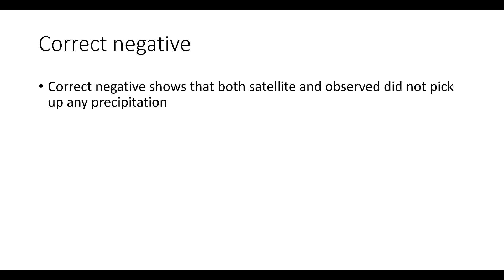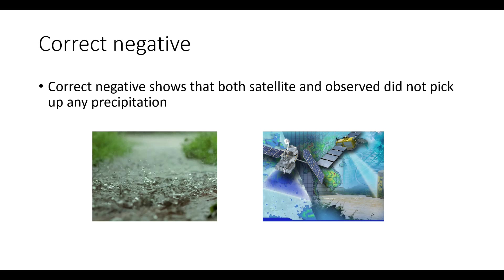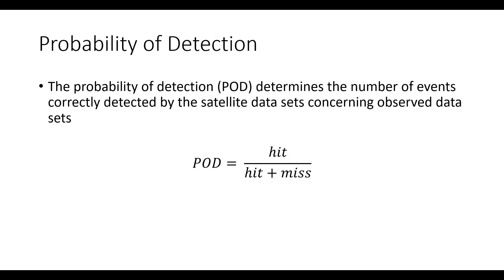Correct negative in general sense represents when both the ground and the satellite are not picking up any rainfall — both the ground data and satellite data show no rainfall — that is termed as correct negative; it's like both are correct. So these are the four main parameters, and coming to the indices, the first index is probability of detection.